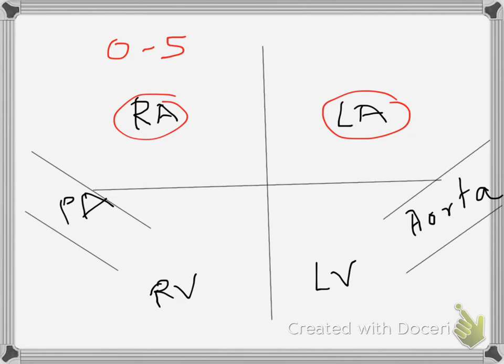During diastole, the tricuspid valve opens and the diastolic pressure in the right ventricle becomes 0 to 5. During systole, however, the right ventricle has a lot of muscle, so it can contract, and the systolic pressure in the right ventricle becomes 30. 30 is the upper limit of normal for the right ventricle.